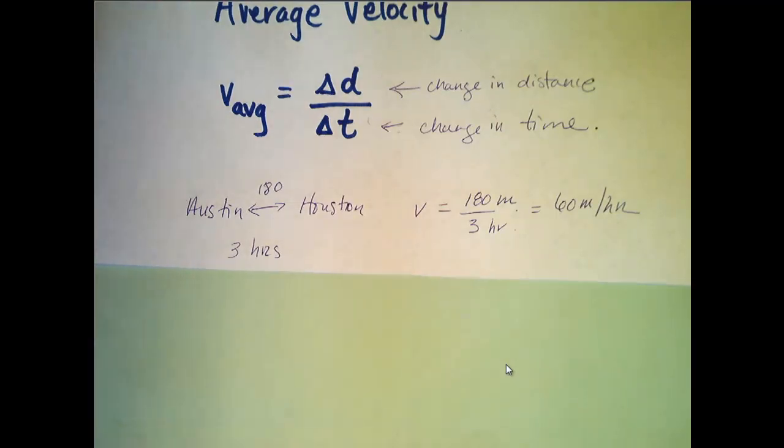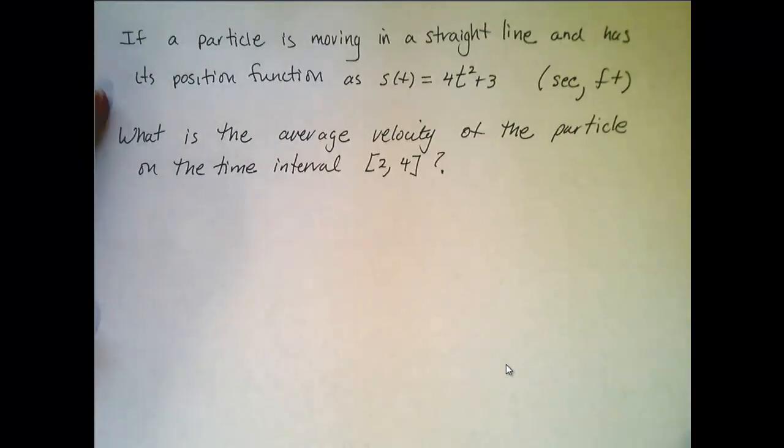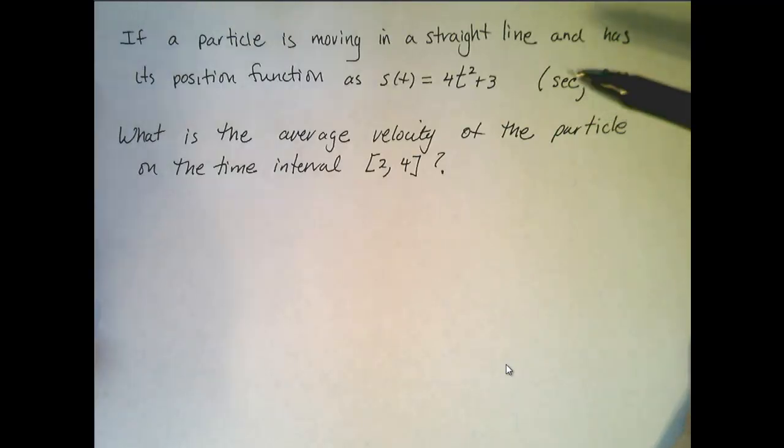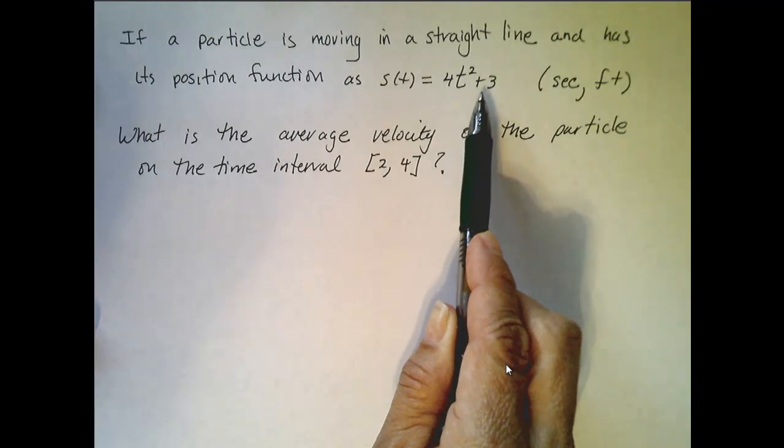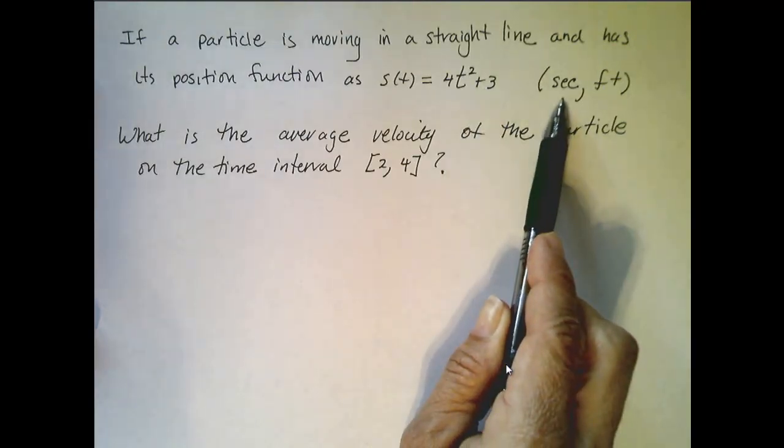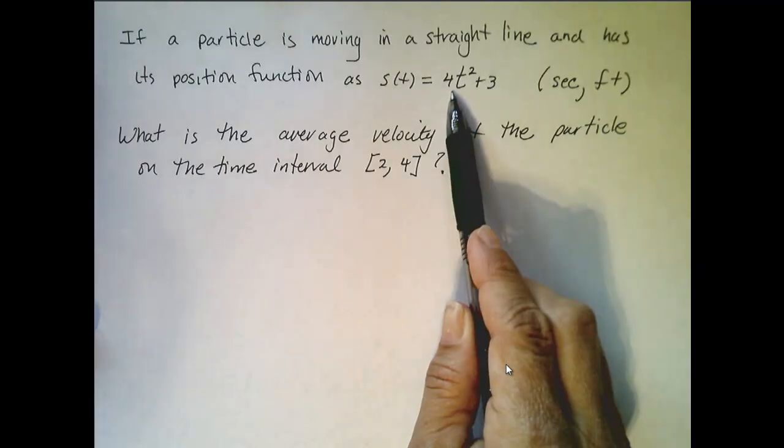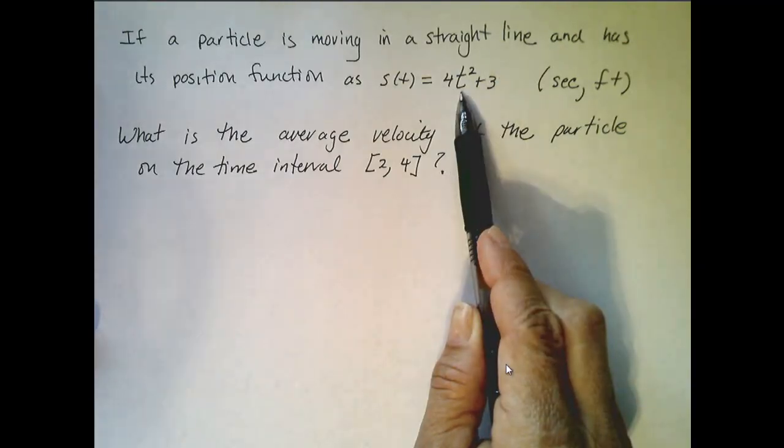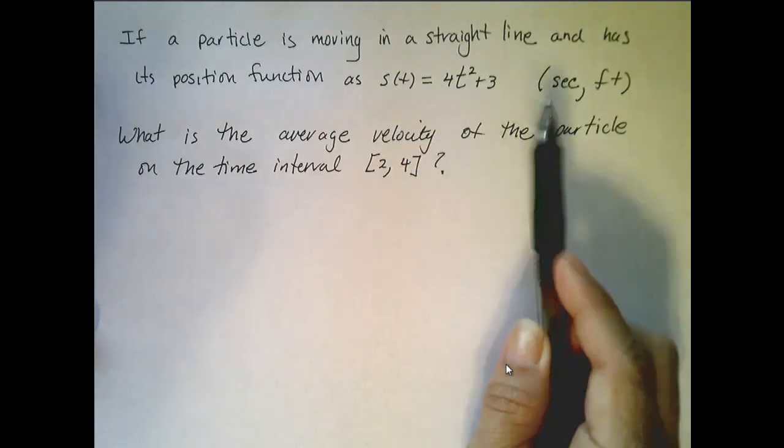So let's look at another example of a particle. Let's assume that there's a particle that's moving in a straight line, and has its position function as s of t equals 4t squared plus 3, where time is measured in seconds and position is measured in feet. So that means that given a particular time, the position of the particle is measured by plugging that time into this formula.